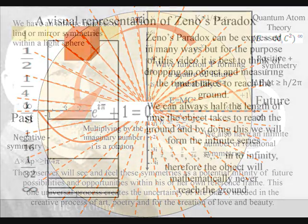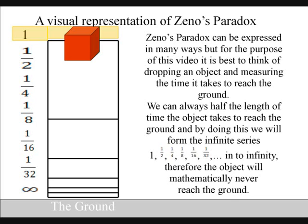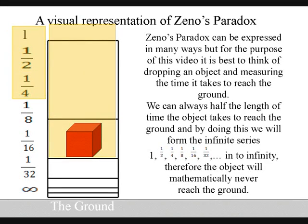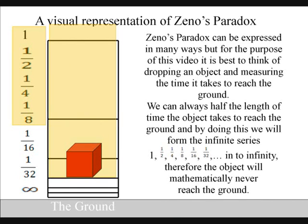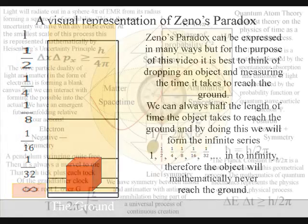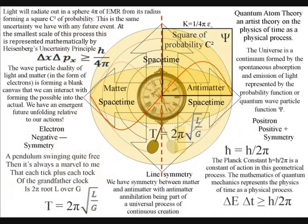People have gone mad trying to understand mathematical infinity, but this video puts forward the idea that we have mathematical infinity because we have a potential infinity of future possibilities and opportunities that forms the uncertainty of everyday life. This can be explained by physics because in this theory, time and space are emergent properties formed by a physical process of continuous energy exchange, with the future continuously coming into existence.